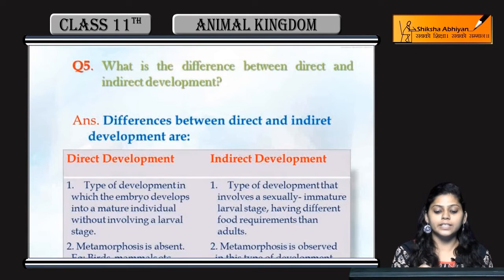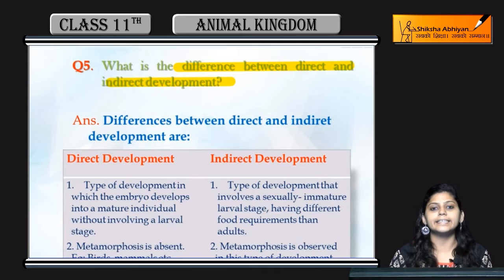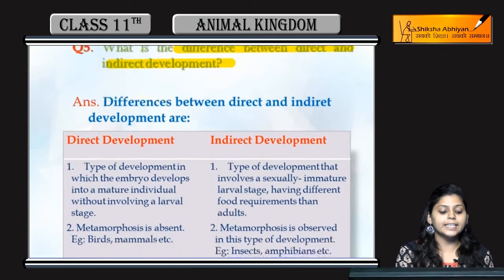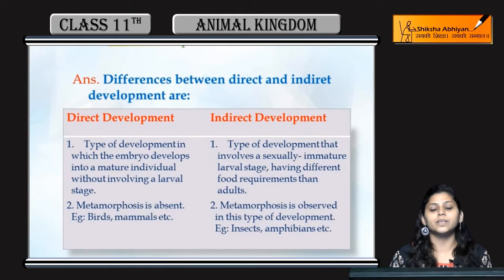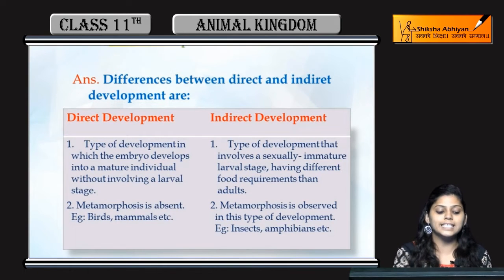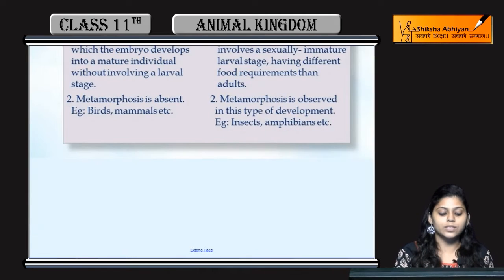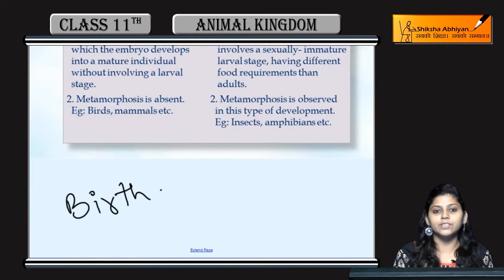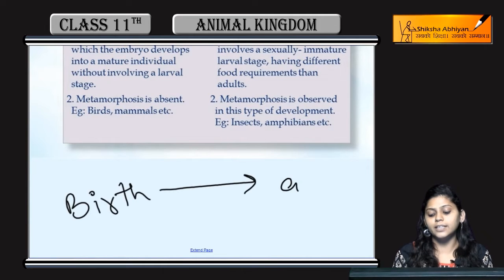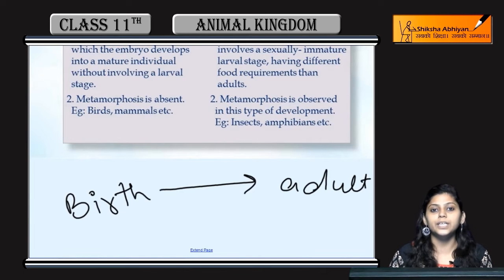The next question is: what is the difference between direct and indirect development? Direct development means that an individual is born and, through cell division, grows directly into an adult form. This is direct development.